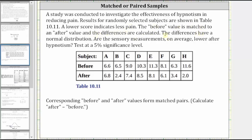Are the sensory measurements on average lower after hypnotism? Test at a 5% significance level. So the first step is to find the differences, which is the after amount minus the before amount. I've already set this up on the next slide.